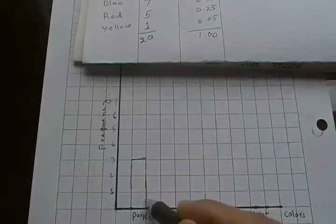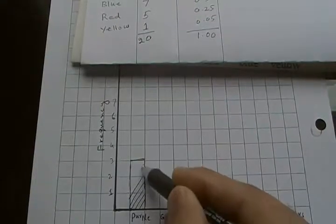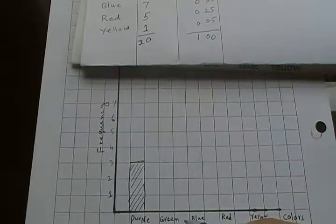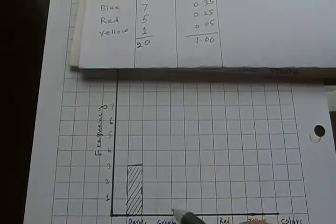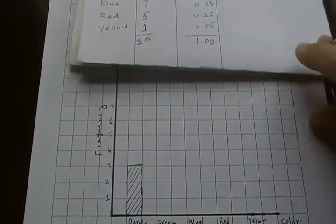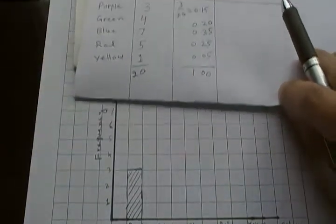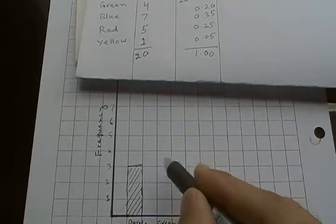This one here, and you can highlight it with lines or fill in with a color or something. This is your bar for purple color. Then for green color, if you remember green has a frequency of 4, so it would go to the height 4.